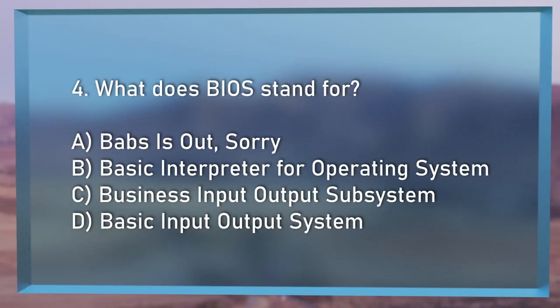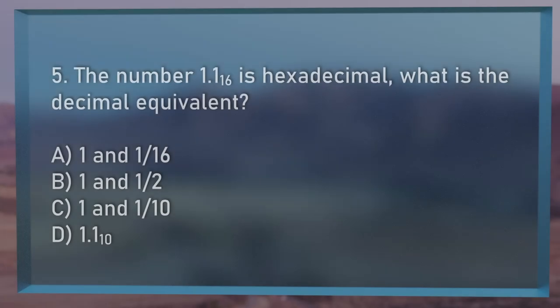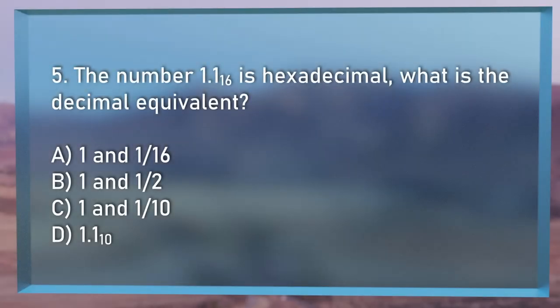Question number 4 — another acronym. What does BIOS stand for? Is it A, Babs is out — sorry; B, Basic Interpreter for Operating System; C, Business Input and Output Subsystem; or D, Basic Input Output System? Question number 5: The number 1.1 in hexadecimal or base 16 — what is the decimal equivalent? Does it mean A, 1 and 1/16th; B, 1 and a half; C, 1 and 1/10; or D, 1.1 in base 10?